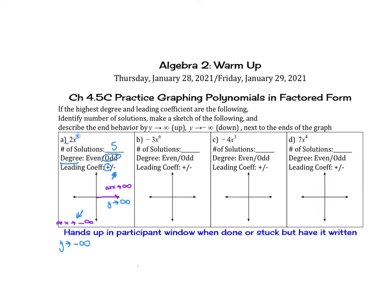For letter B, the number of solutions is 6 — just look at the exponent. The degree is an even number and the leading coefficient is negative, so that tells us both ends go down. As x approaches negative infinity, y approaches negative infinity. On the right, as x approaches positive infinity, y is also going down, so negative infinity again.